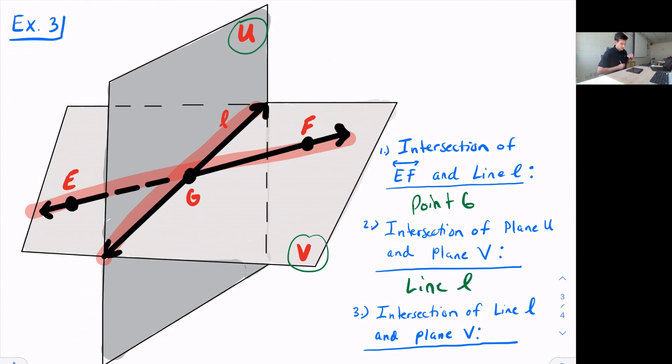And lastly, the intersection of line L and plane V. So plane V is our horizontal plane. And it's going to intersect line L at line L. And those are points, lines, and planes.